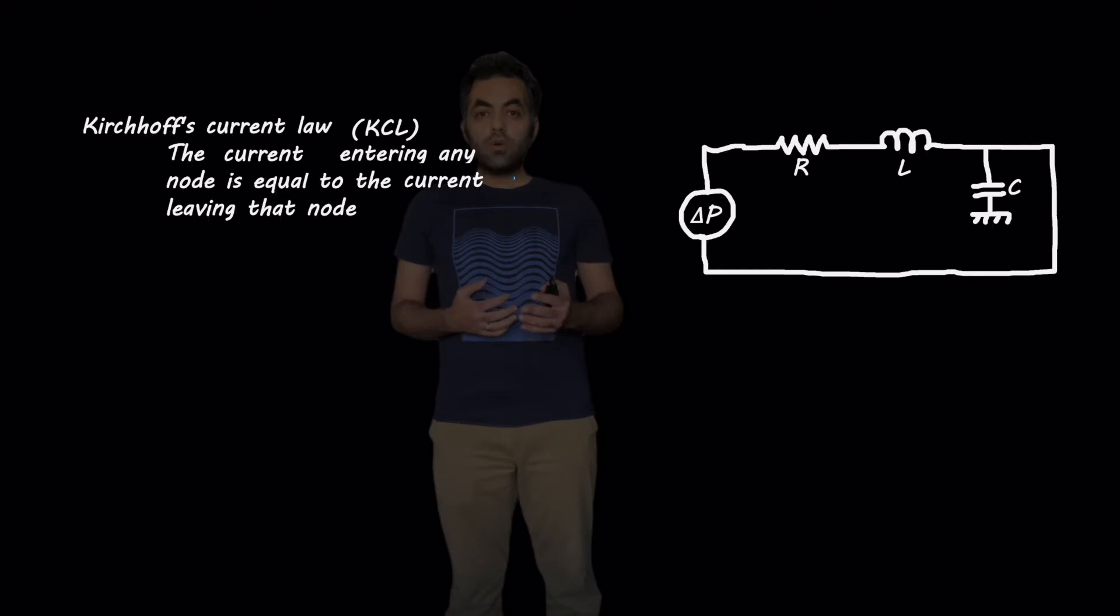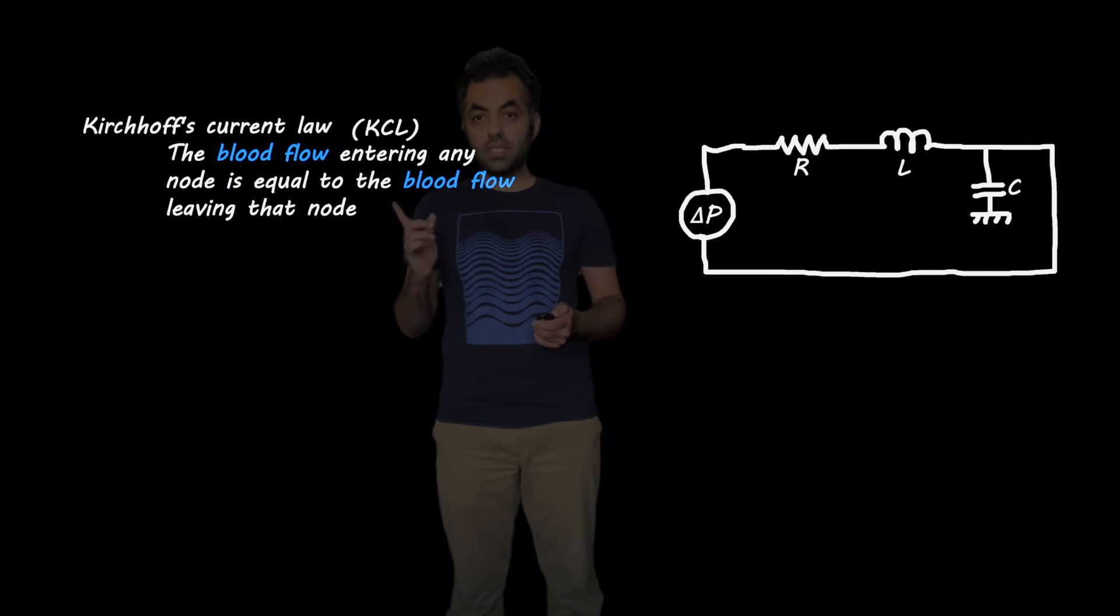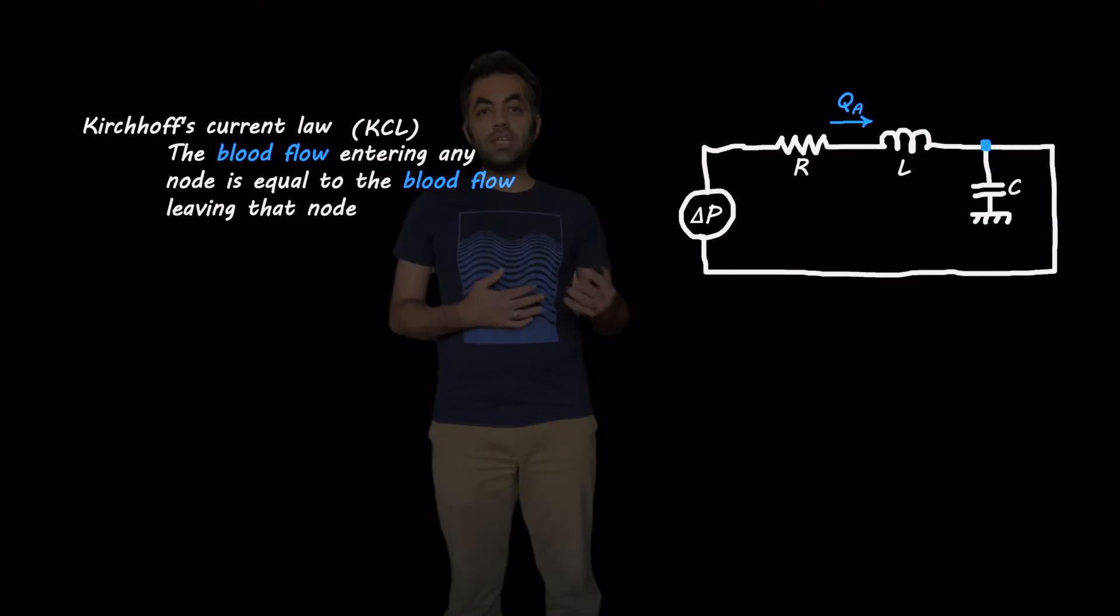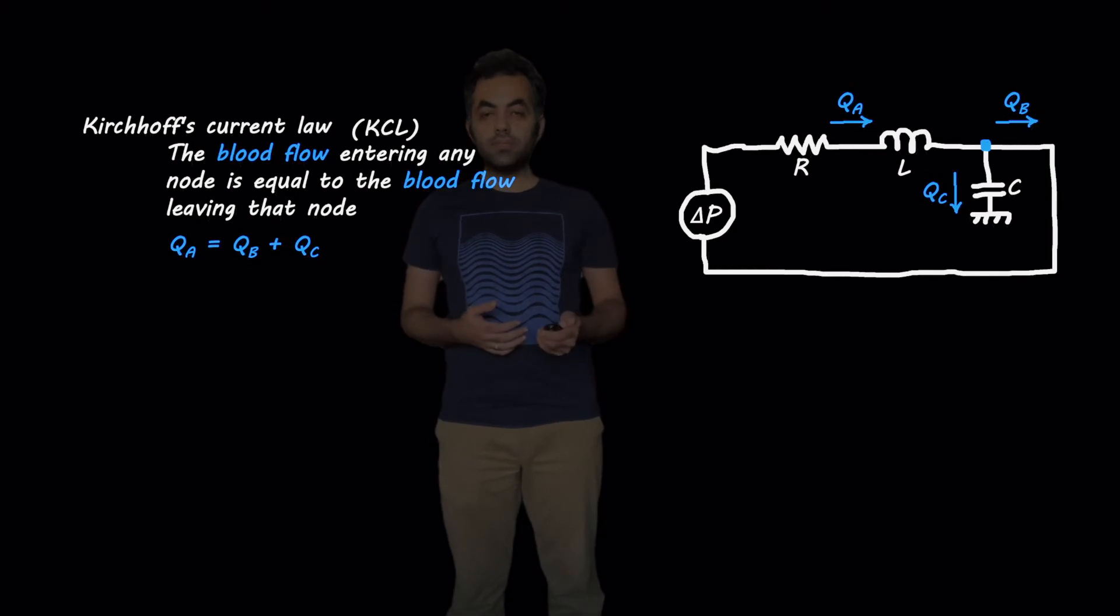Kirchhoff's Current Law, or KCL, says that the current entering any node is equal to the current leaving that node. And we know that the electric current describes blood flow rate. So let's replace it by blood flow in this statement. If you look at this node in the electric circuit that we have here, KCL law says that blood flow entering this node equals blood flow exiting or leaving that node. For example, if we have QA entering this node and then QB and QC leaving that node, then based on KCL, QA equals QB plus QC.